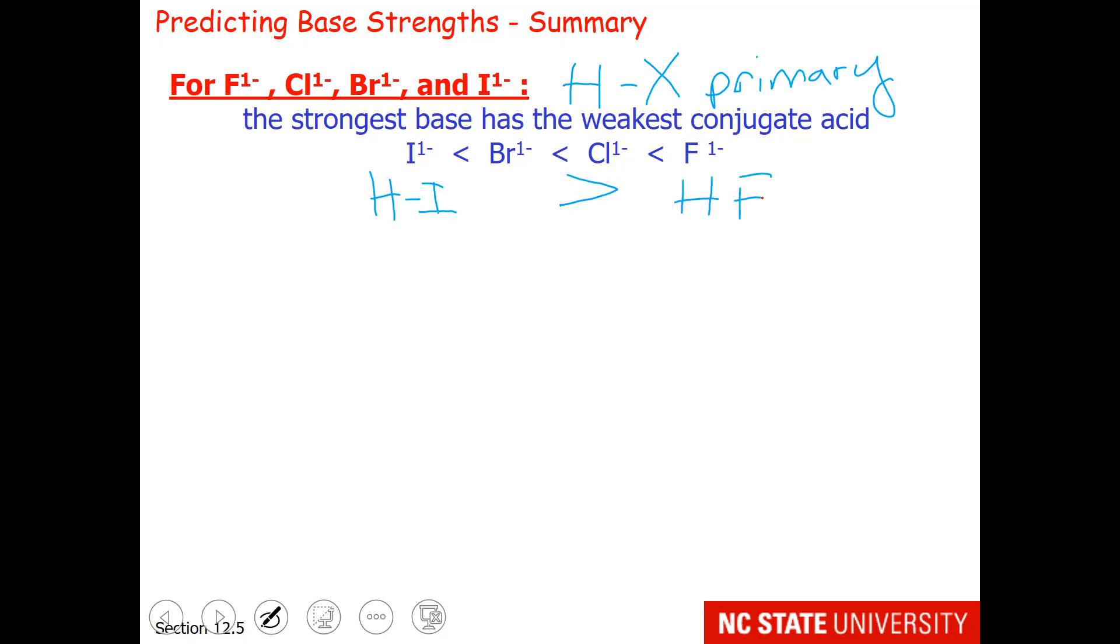We know that when comparing acids, HI is our strongest acid because it's furthest down the group and HF is our weakest. The opposite is true for bases. Fluoride is our strongest base and iodide is our weakest base. Let's take a look on the table and see how that works out.